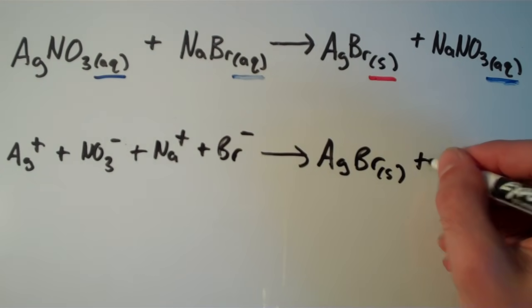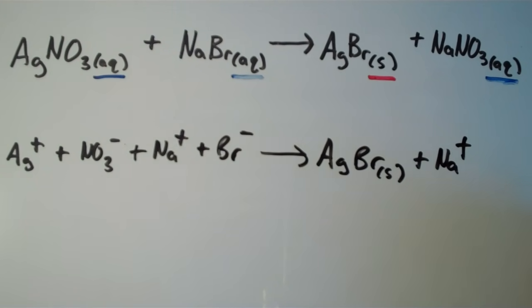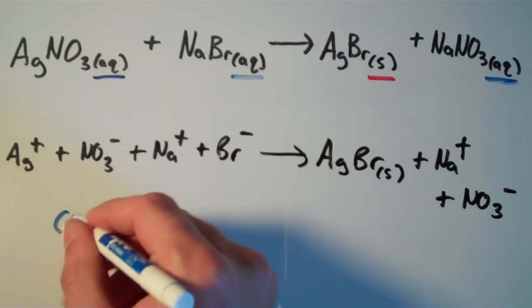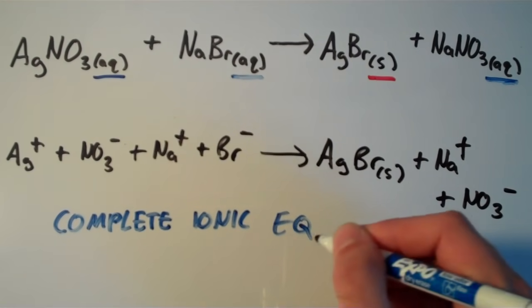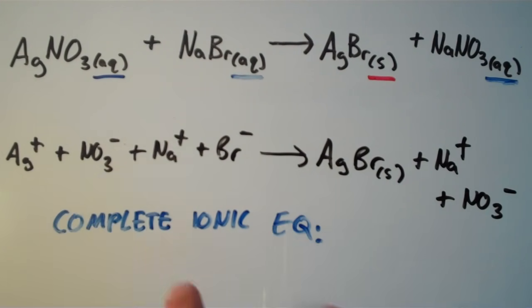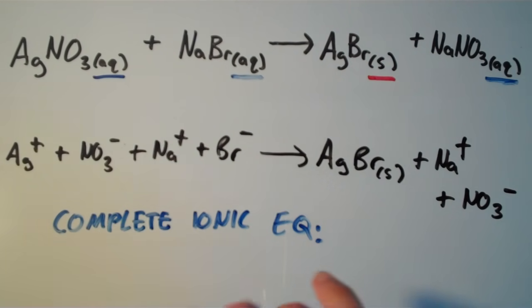For the rest of the products, we have Na+ and NO3-. This equation we've now written is called a complete ionic equation. It's a more accurate description of what's actually going on in solution. We can simplify it further by taking a mathematical approach: if anything appears on both sides of the equation, we can cancel it out.